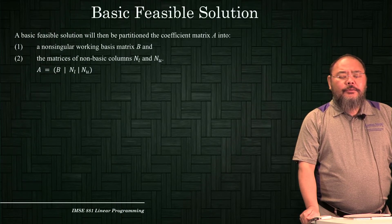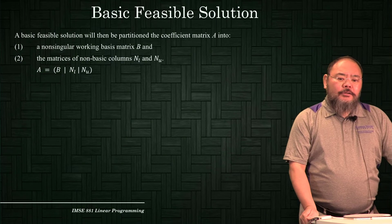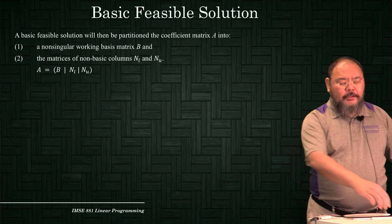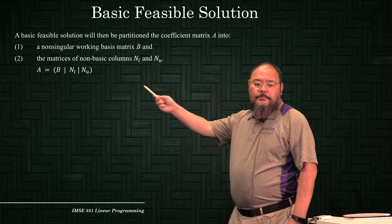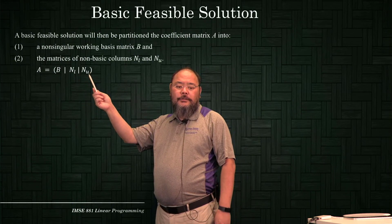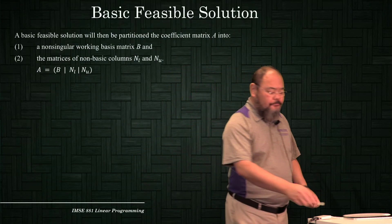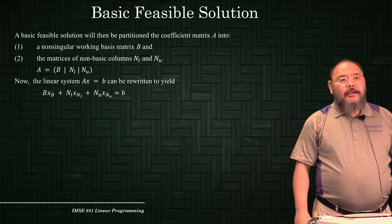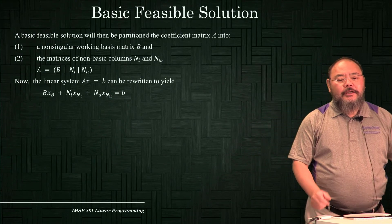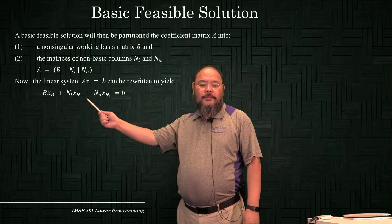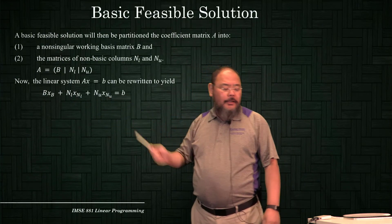The basic feasible solution partitions the constraint matrix A into three parts as well: a non-singular working basis B, the non-basic columns corresponding to variables at their lower bound NL, and the columns corresponding to non-basic variables at their upper bound NU. The constraint Ax = b can then be rewritten as B·xB + NL·xNL + NU·xNU = b.